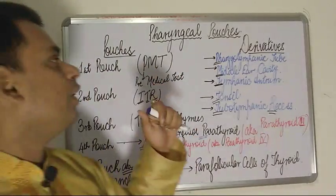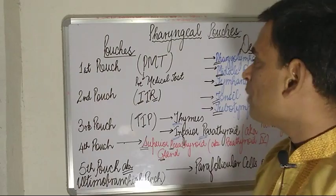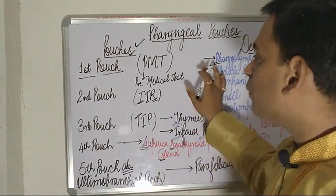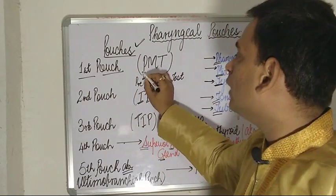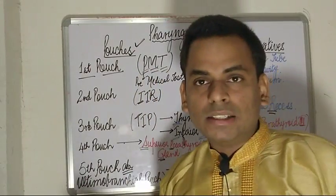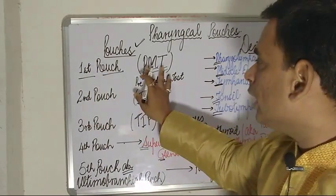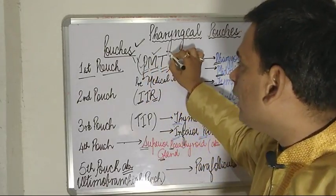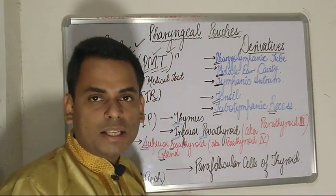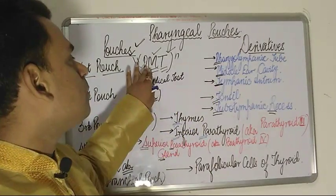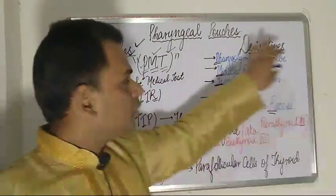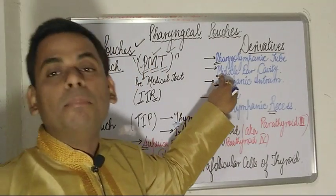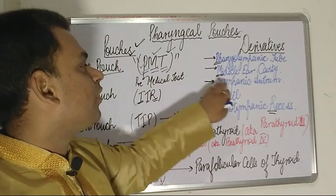Beginning with the first pouch: the derivatives from the first pouch can be better remembered using the mnemonic PMT — that is, Pre-Medical Test. Every initial letter of P, M, and T refers to one of the derivatives. P refers to the pharyngotympanic tube, M refers to the middle ear cavity, and T refers to the tympanic antrum.